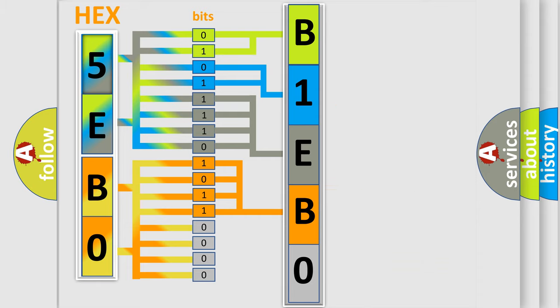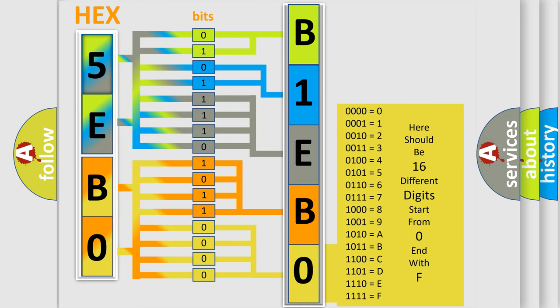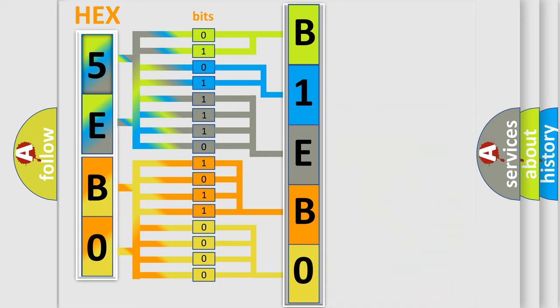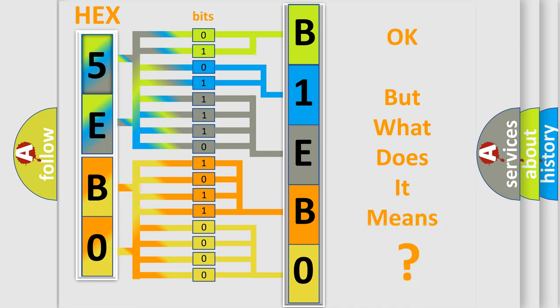A single byte conceals 256 possible combinations. We now know in what way the diagnostic tool translates the received information into a more comprehensible format. The number itself does not make sense to us if we cannot assign information about what it actually expresses.